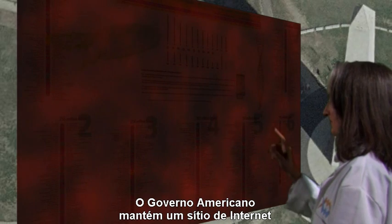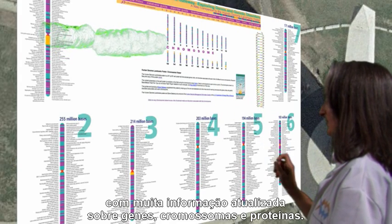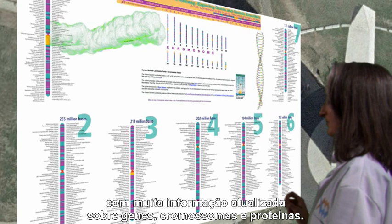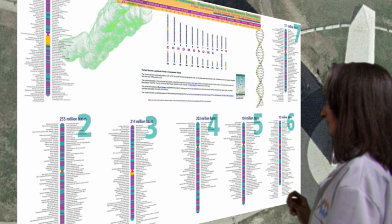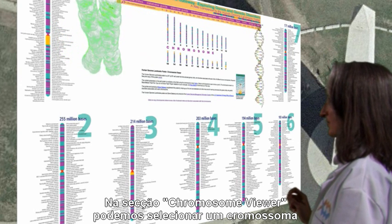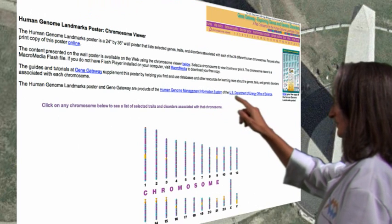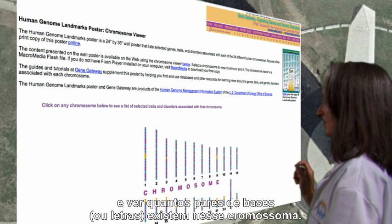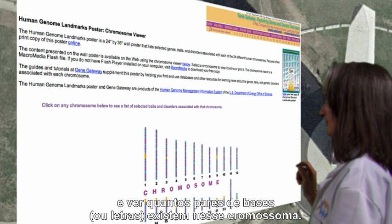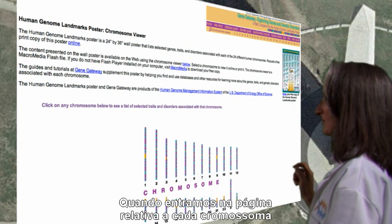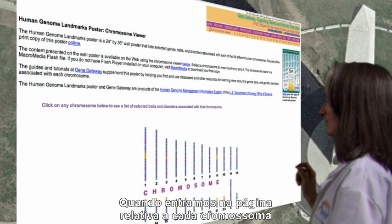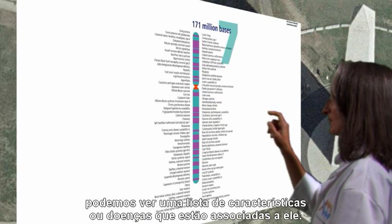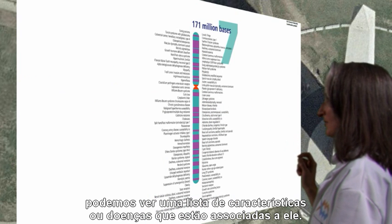The US government maintains a website with much of the current information about genes, chromosomes, and proteins. In the section labeled chromosome viewer, you can select a chromosome and see how many base pairs or letters are on the chromosome. When you get to the webpage for each particular chromosome, you can see a list of traits and disorders associated with genes on that chromosome.